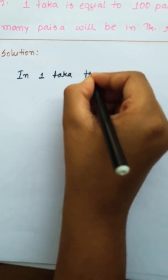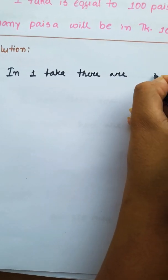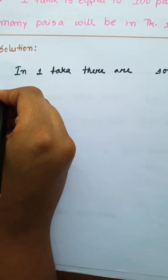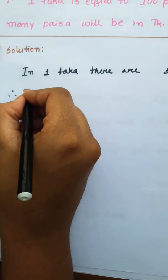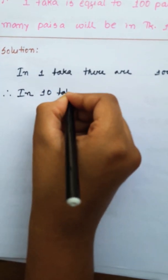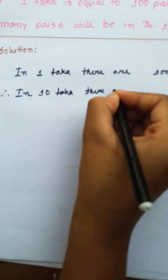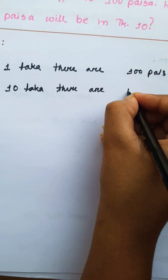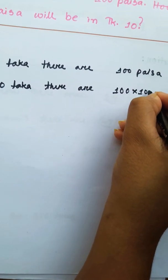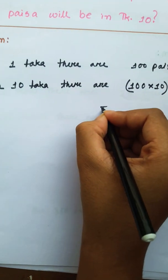The next math problem: 1 tucker is equal to 100 paisa. How many paisa will be in 10 tucker? In 1 tucker there are 100 paisa. Therefore, in 10 tucker there are 100 x 10 paisa, which equals 1000 paisa.